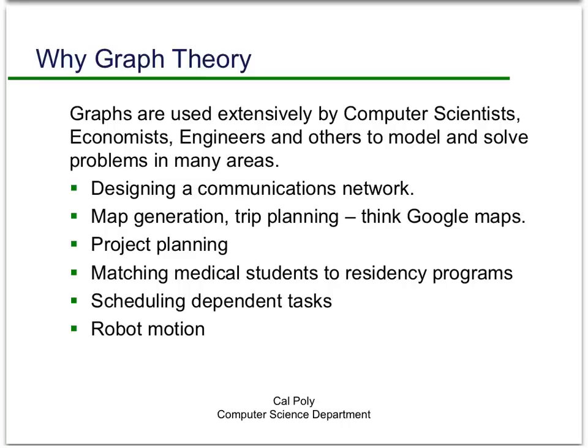Computer scientists, economists, and all sorts of different kinds of scientists use graphs for modeling and solving problems. Some things computer scientists have used it for include communications networks, map and trip planning—think of Google Maps—project planning, managing large projects of dependent tasks like building a bridge or a house, matching medical students to residency programs, scheduling dependent tasks perhaps in a computer, and robot motion planning, which is important for automated manufacturing.